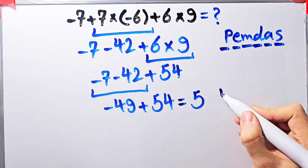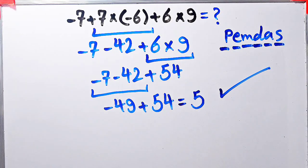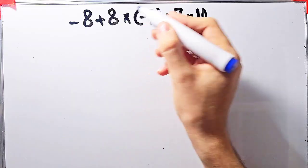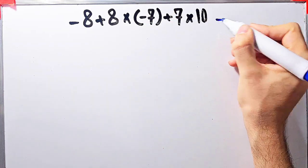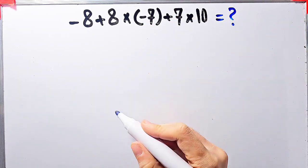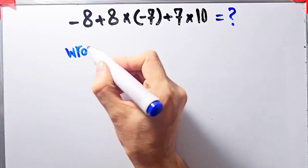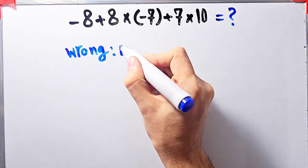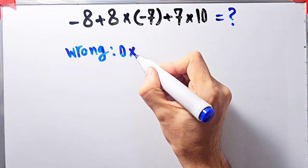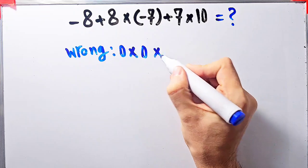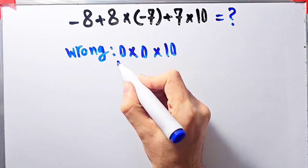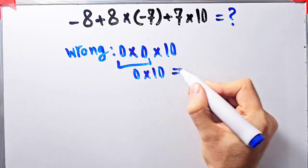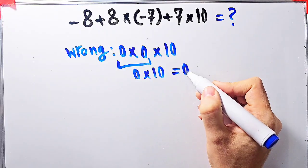Let's solve another question about PEMDAS rule. In this question we have: negative 8 plus 8 times negative 7 plus 7 times 10. What is the answer? Some people solve it like this: negative 8 plus 8 equals 0, then 0 times negative 7 plus 7 which equals 0, then times 10. 0 times 0 equals 0, and 0 times 0 times 10 equals 0. They say the final answer equals 0, but this answer is wrong.